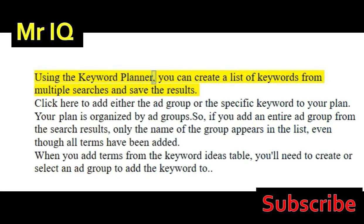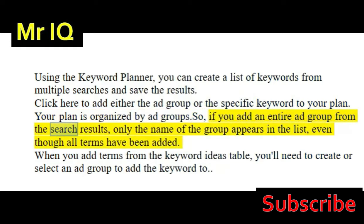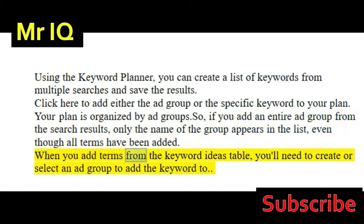Using the Keyword Planner, you can create a list of keywords from multiple searches and save the results. Click here to add either the ad group or the specific keyword to your plan. Your plan is organized by ad groups. So if you add an entire ad group from the search results, only the name of the group appears in the list, even though all terms have been added. When you add terms from the keyword ideas table, you'll need to create or select an ad group to add the keyword to.